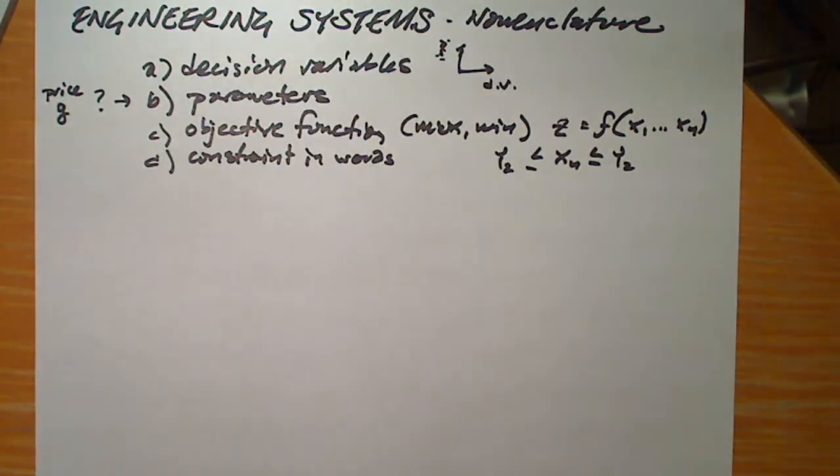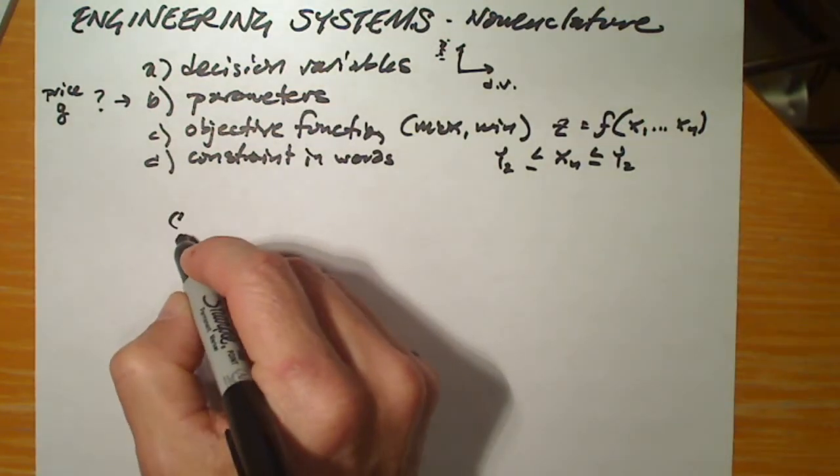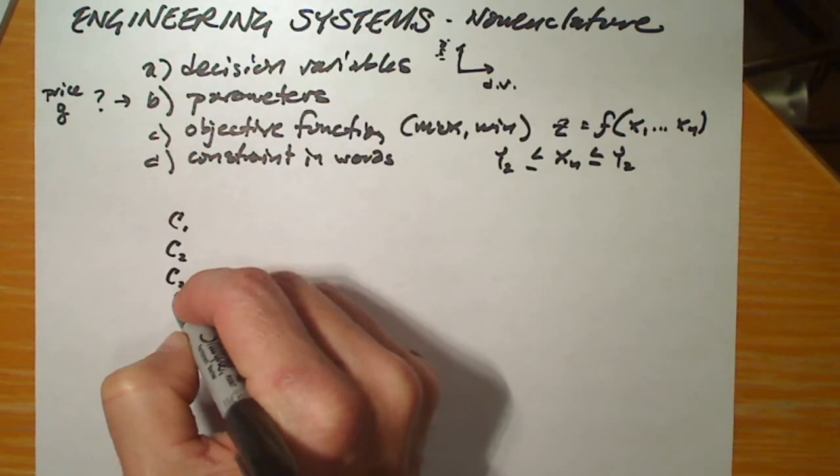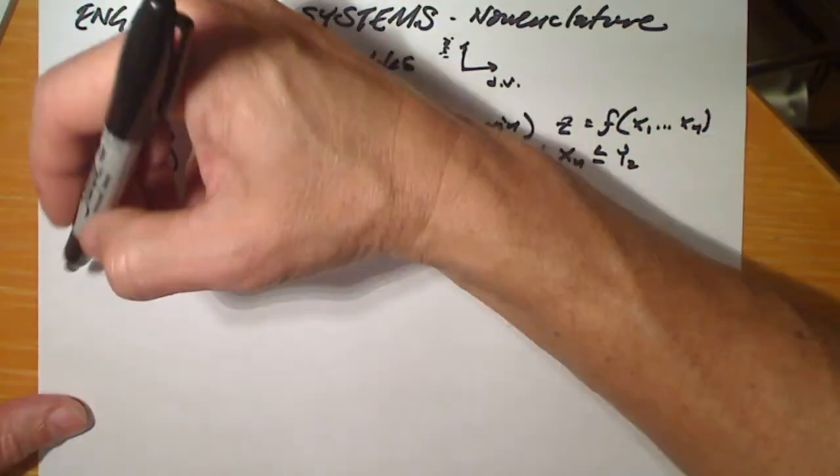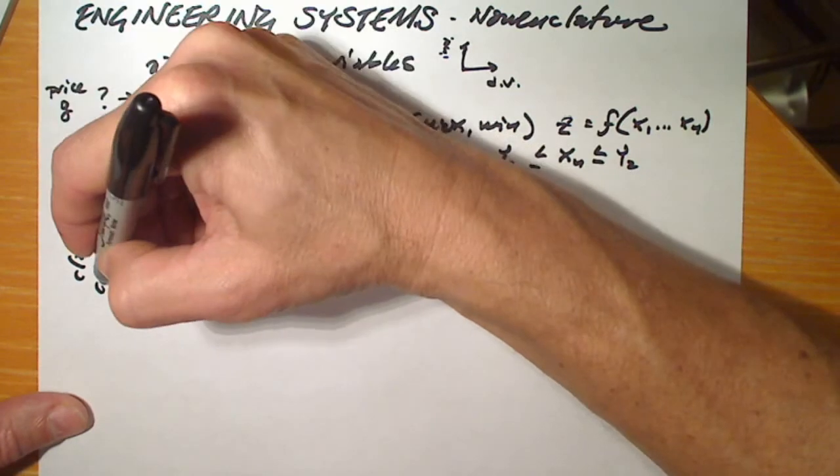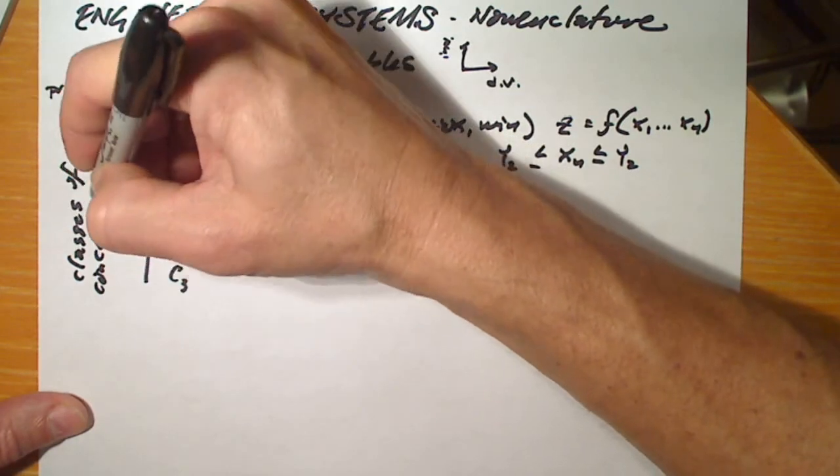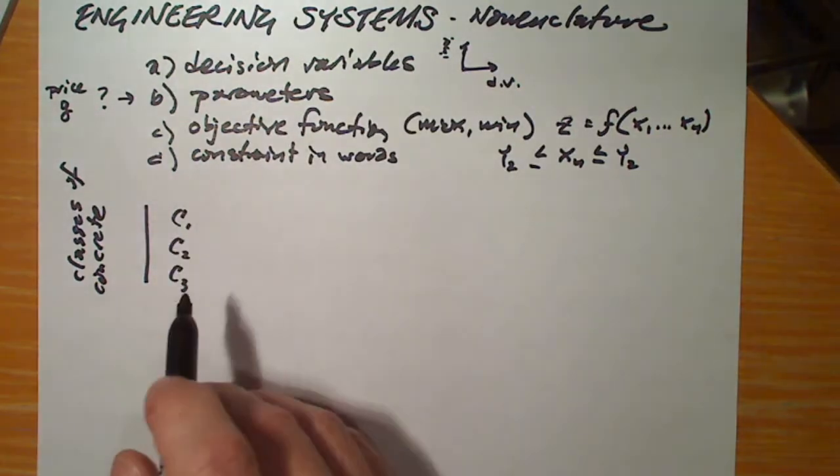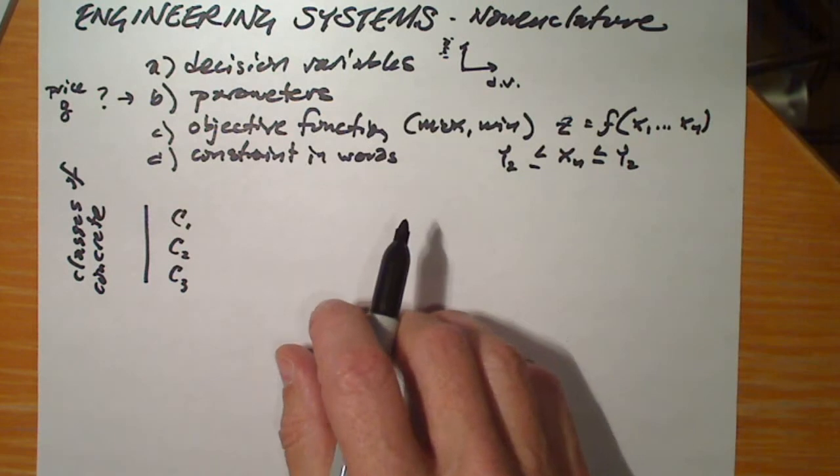So let's go back to our problem on materials. Here we have a contractor that can sell several classes of concrete. Let's call those classes C1, C2, C3. These are the classes of Portland cement concrete that a contractor can sell. And presumably, each one of these has a demand in the marketplace.